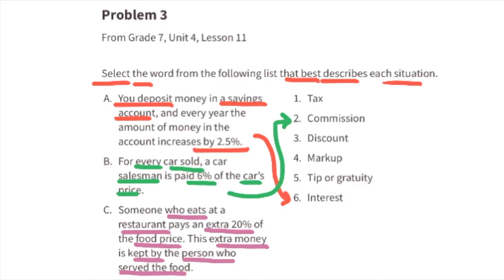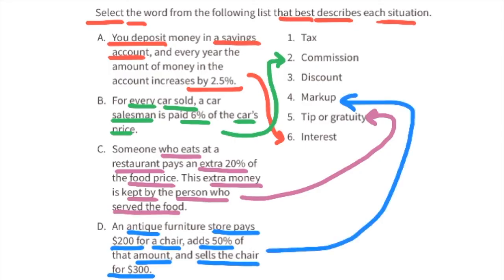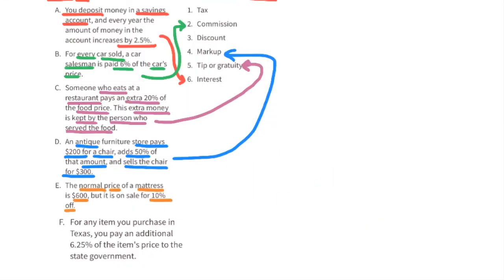D: An antique furniture store pays $200 for a chair, adds 50% of that amount, and sells the chair for $300. This situation represents a markup. E: The normal price of a mattress is $600, but it is on sale for 10% off. This situation represents a discount.